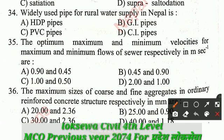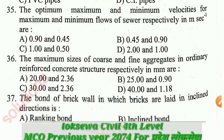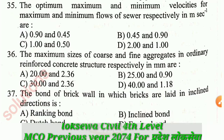Question number 34: The widely used pipe for rural water supply in Nepal is: A - HDPE, B - GI, C - PVC, D - CI. The correct answer for Q34 is HDPE.